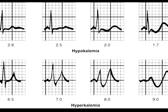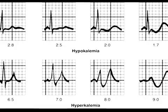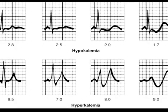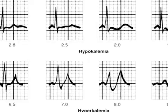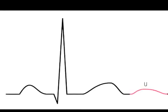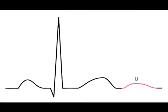Let me show you a clearer U wave. Just look at this EKG — you can see the U wave here; it comes after the T wave. This is characteristic of hypokalemia, that is low potassium level less than 3.5 milliequivalents per liter.